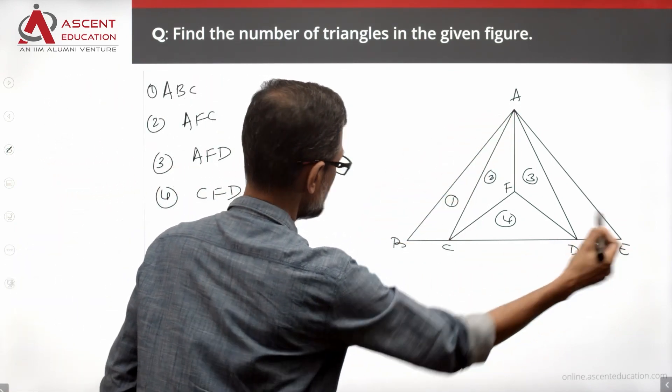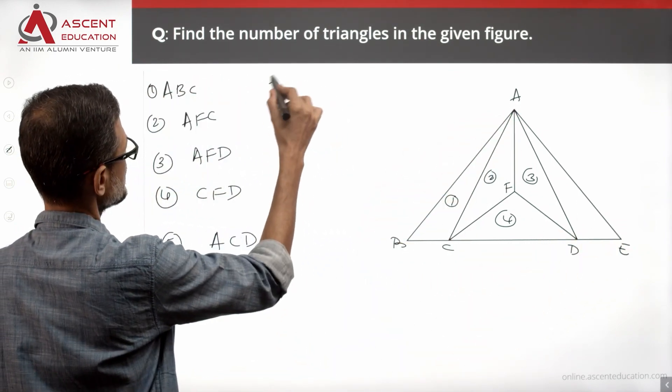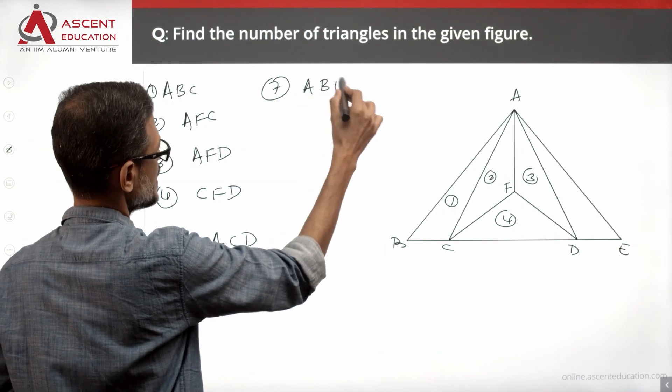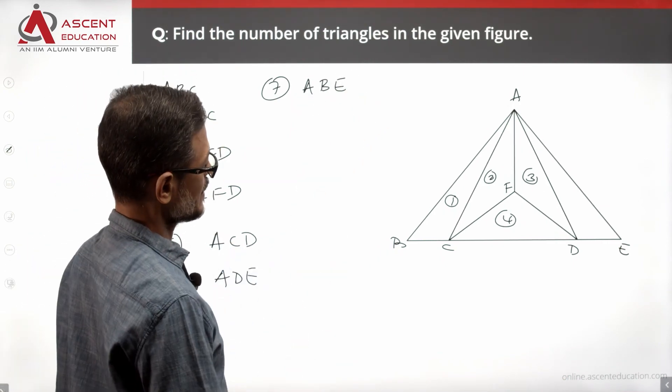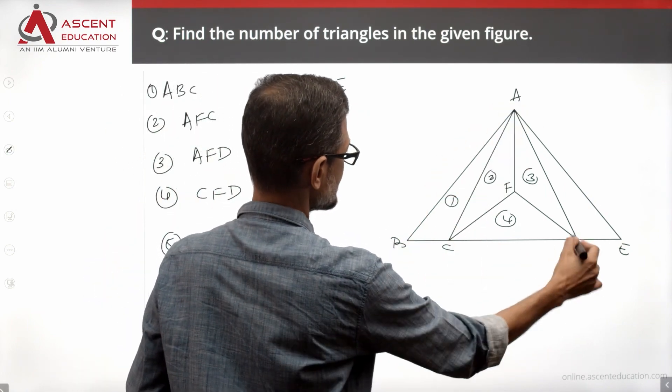But this is also a triangle: A, B, E is also a triangle. So, the seventh triangle is A, B, E. If there is a triangle - there is no triangle. But actually, there is a triangle: A, B, D is a triangle. Correct?